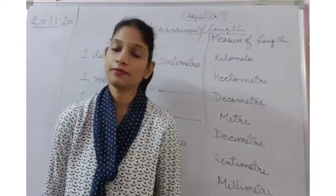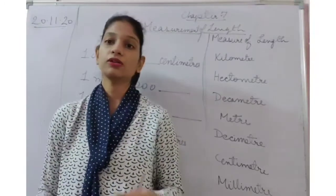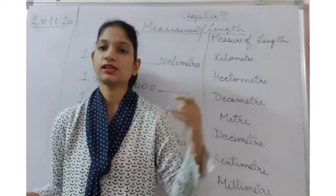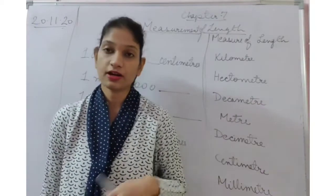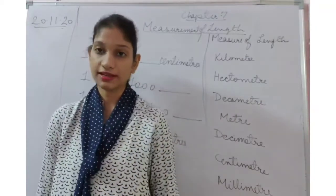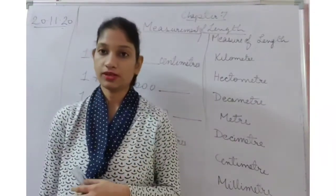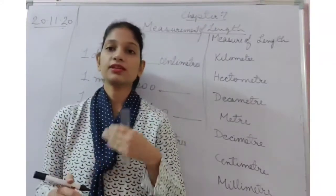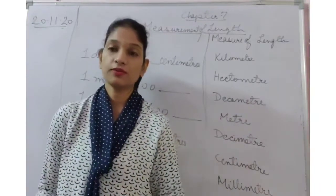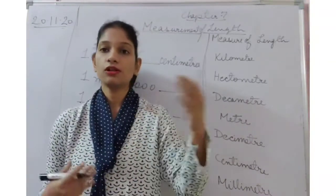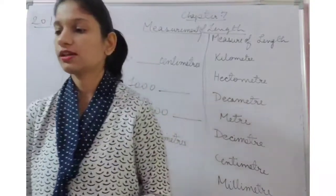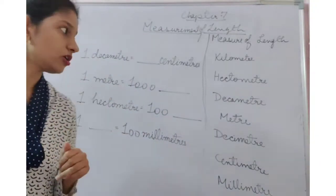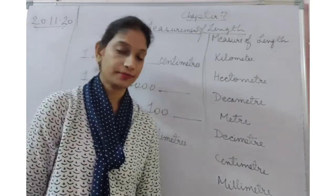If I talk about the distance between two cities, say the distance between Jaipur and Agra, or Jaipur and Delhi, it will be measured in kilometers. So centimeter, meter, kilometers — these are all the standard units of measuring length, and we are all familiar with these units.